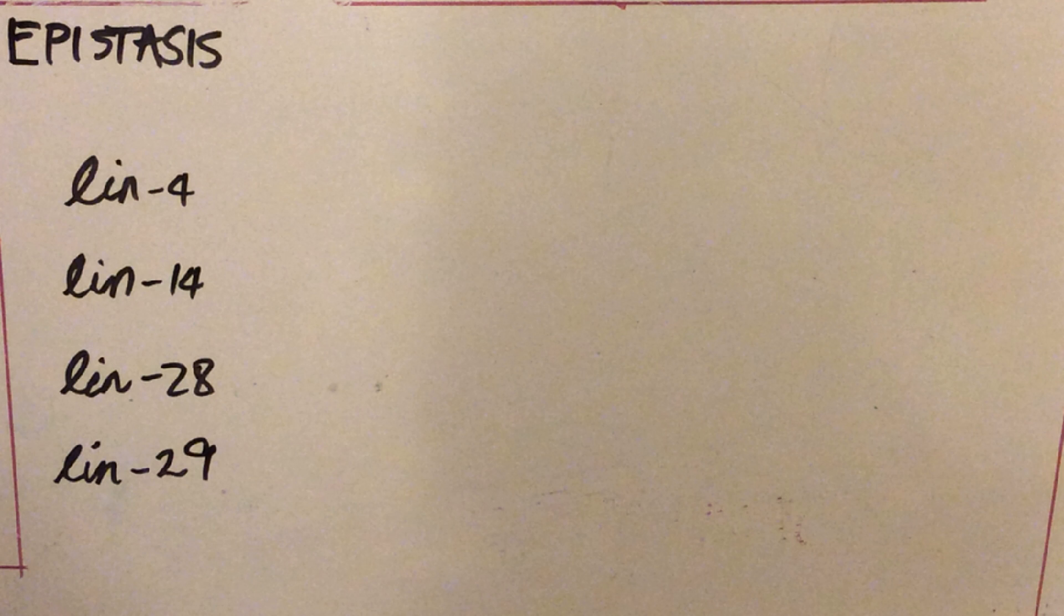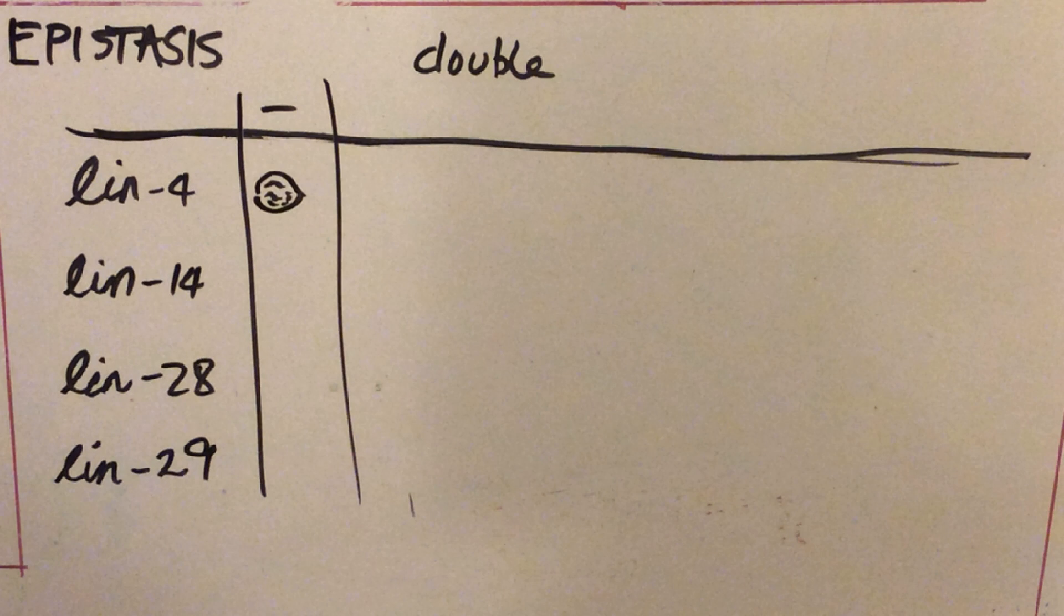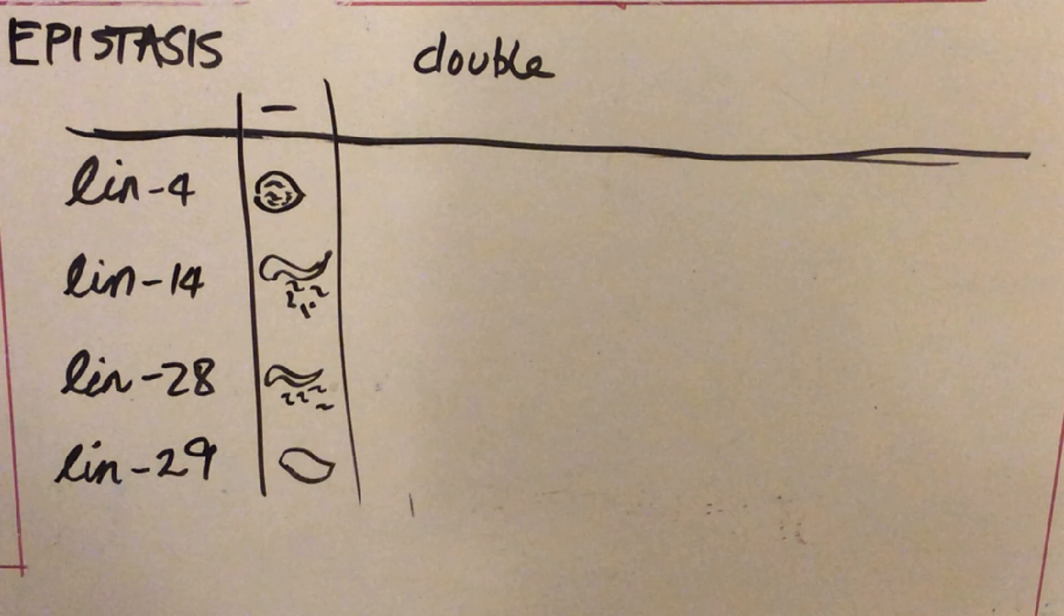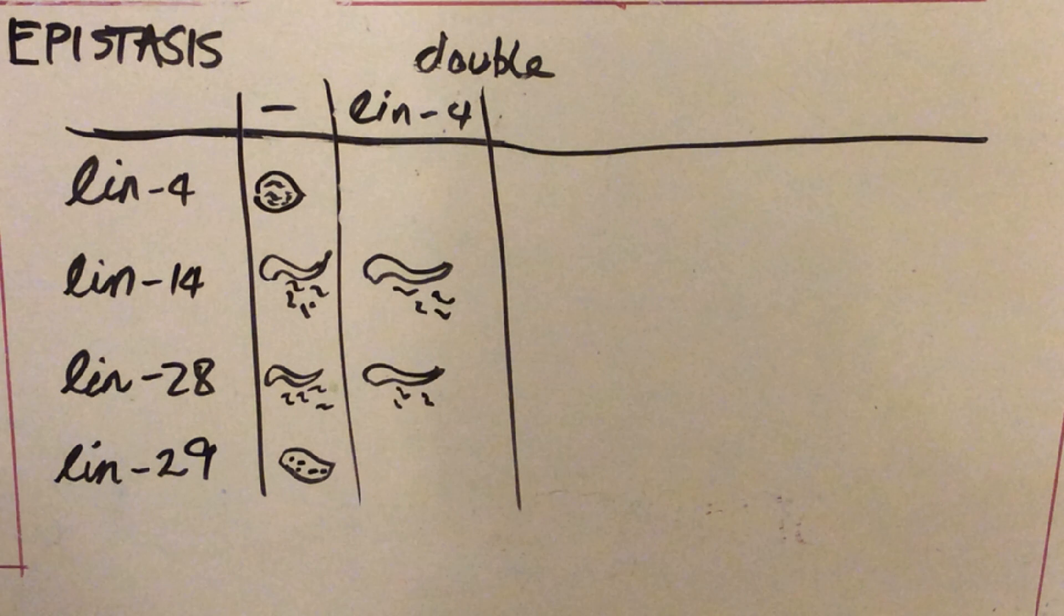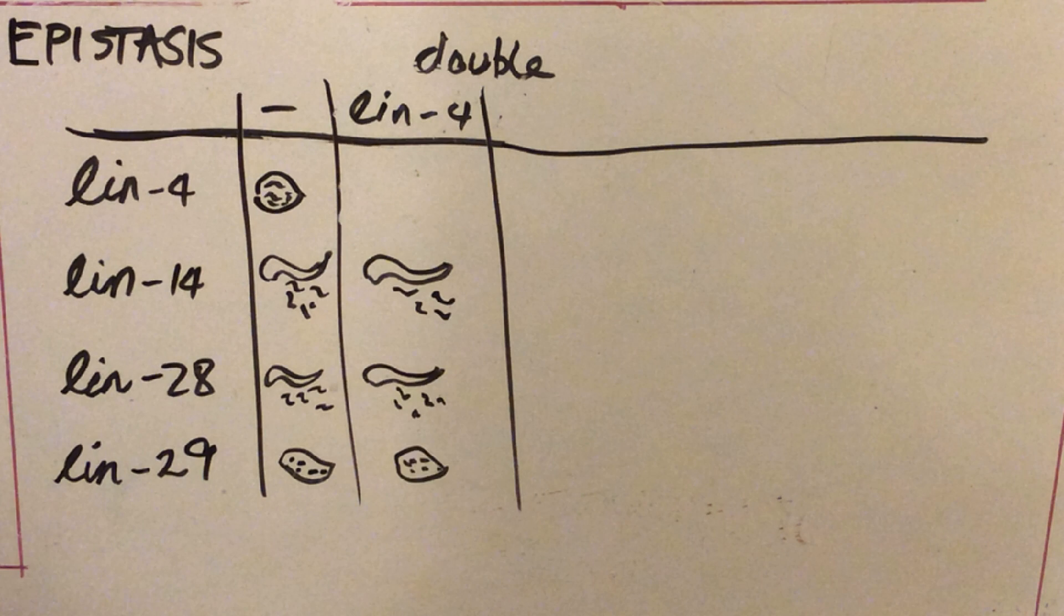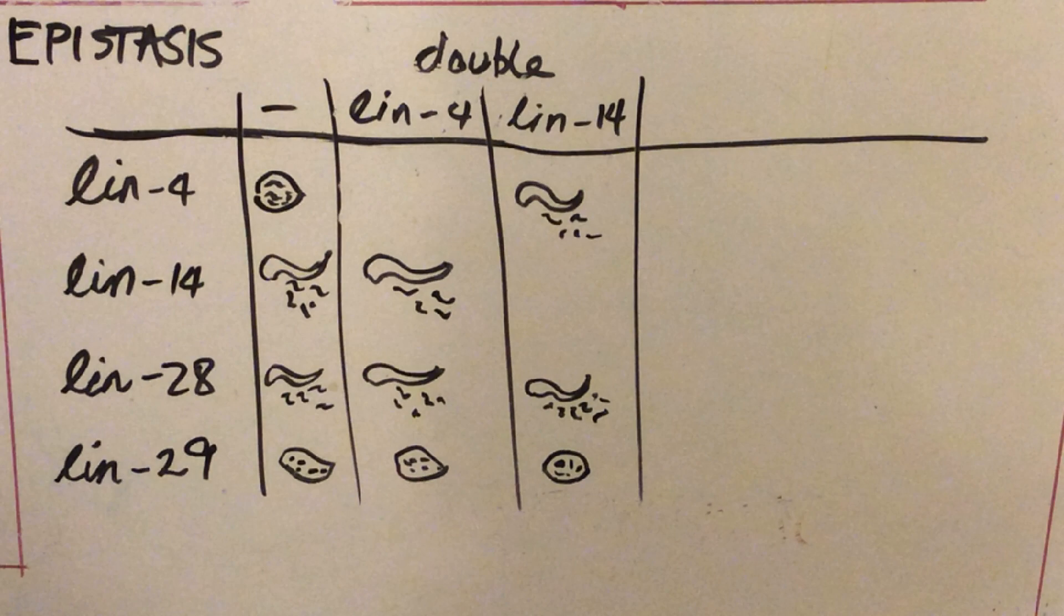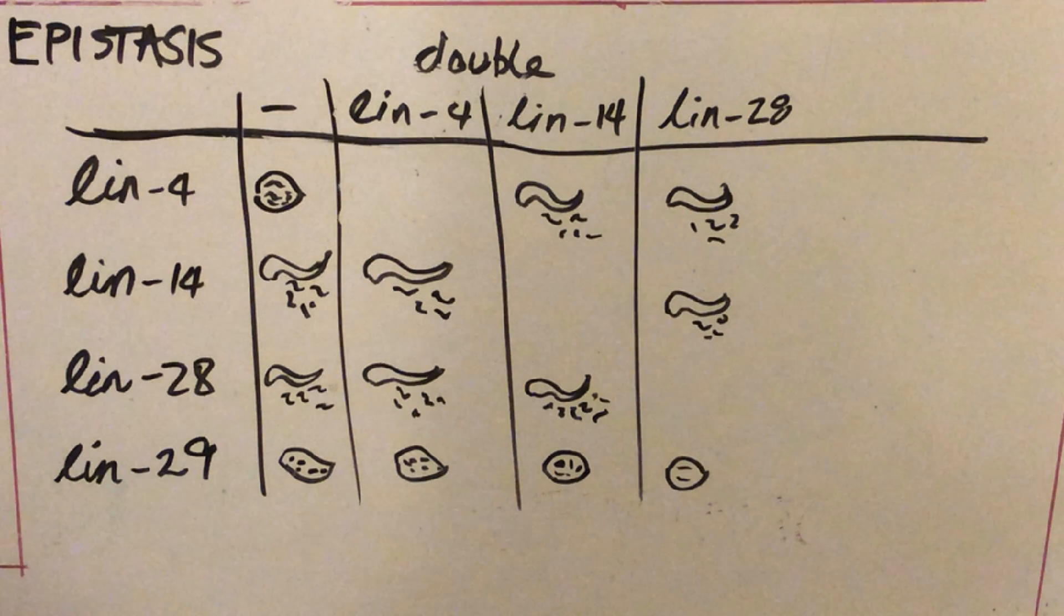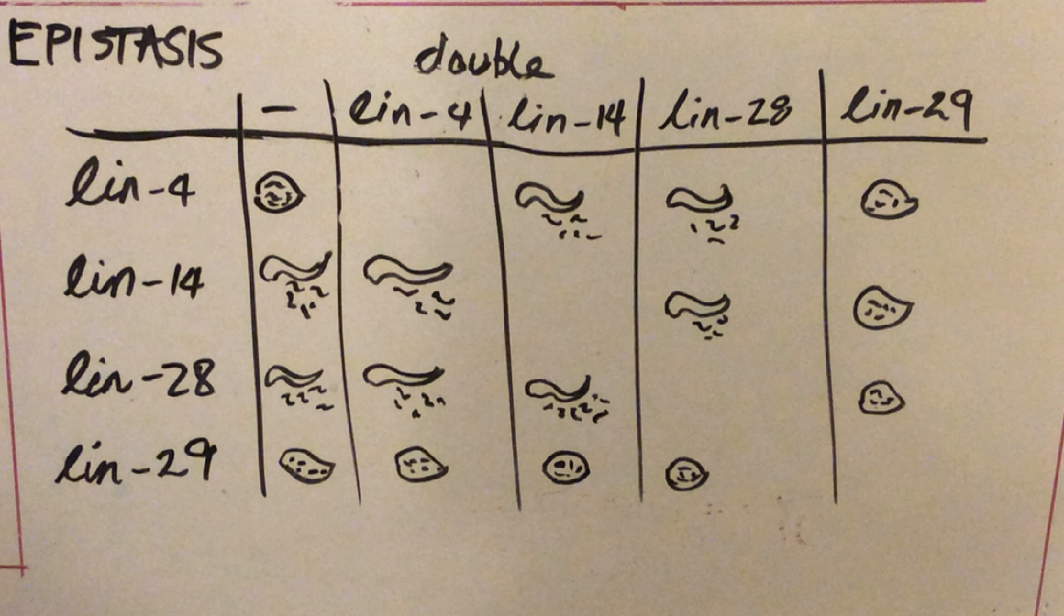On the left are the single mutants that you see: LIN-4, 14, 28, 29, and now we're drawing in the double mutants that are doubles with the genes on the top in each column. As you can see, LIN-4 doubles with LIN-14 or 28 give wild-type phenotypes, whereas any double with LIN-29, which are circled here, gives a bag-of-worm phenotype.